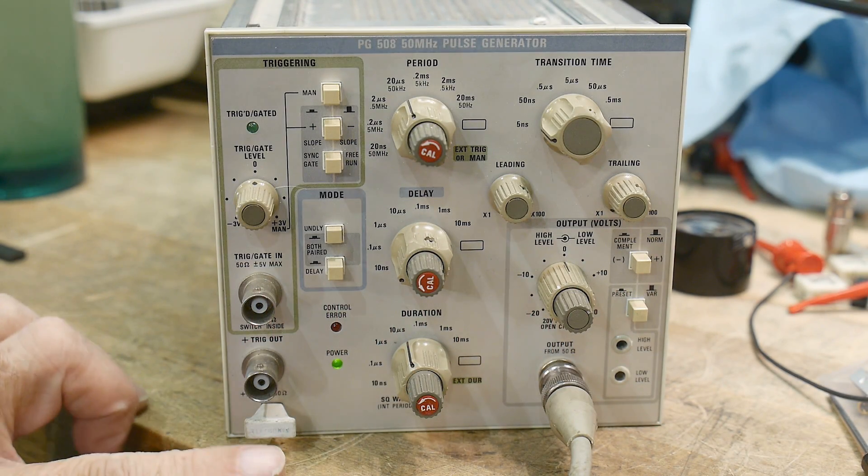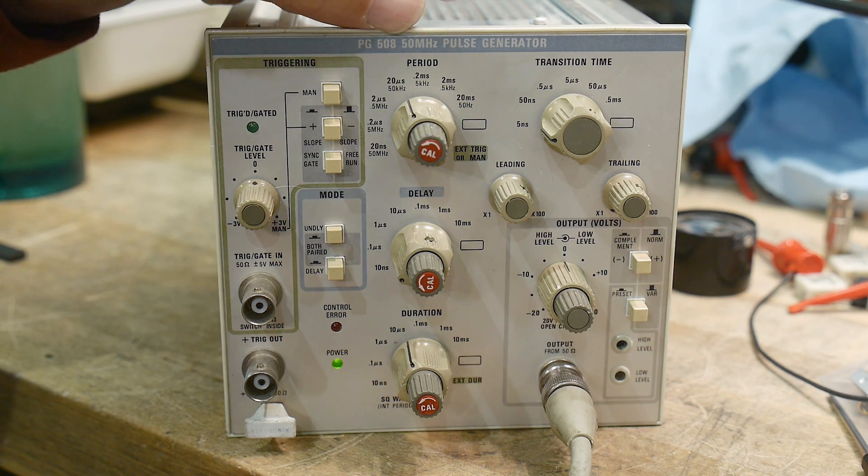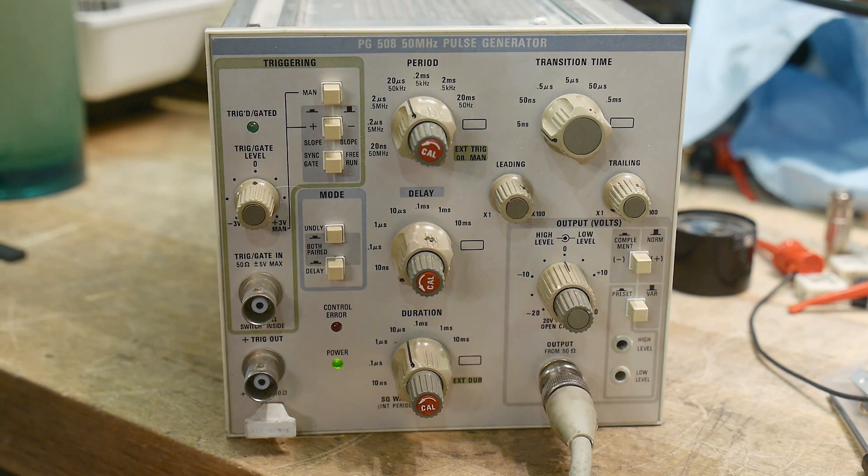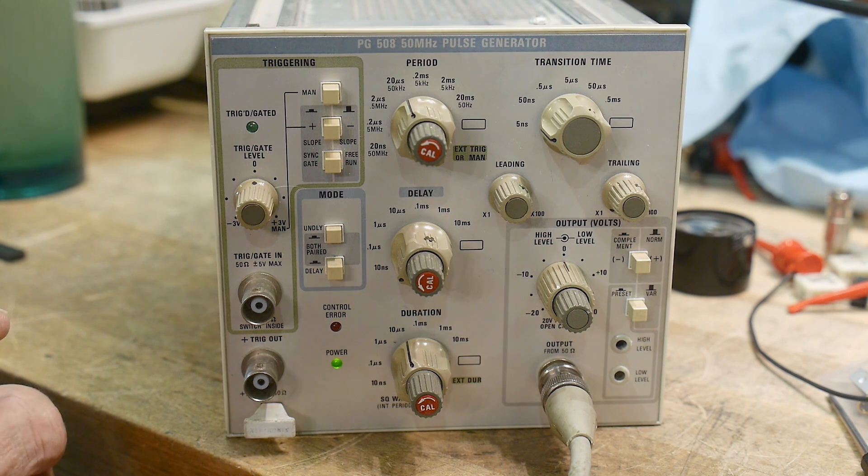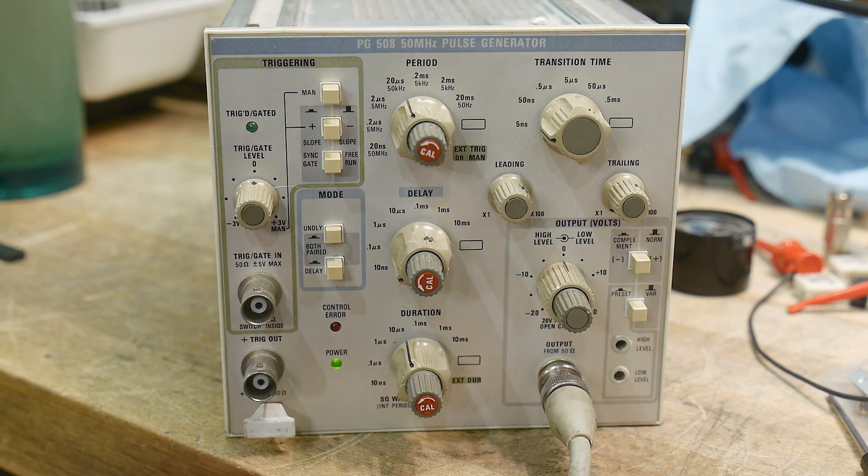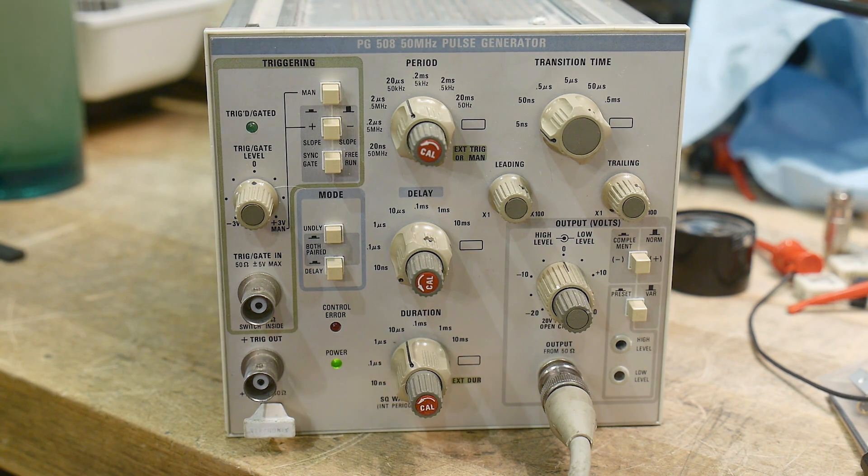All right, the next thing on the bench is a PG508, a 50 MHz pulse generator. I've had a Philips pulse generator, HP pulse generators, I've got a Tektronix pulse generator, a lot of pulse generators. This one seems pretty nice though, I kind of like this one.